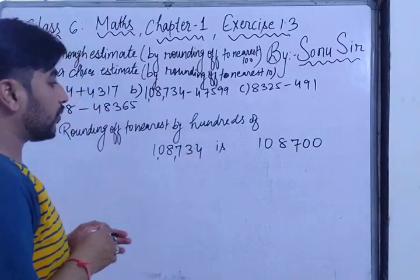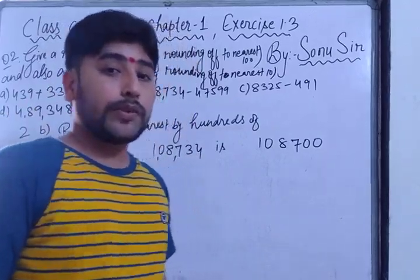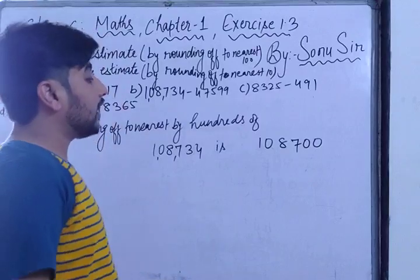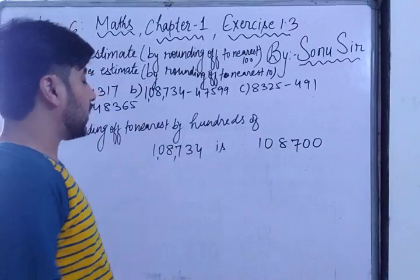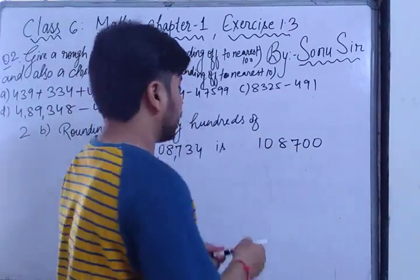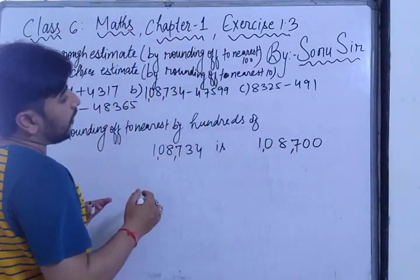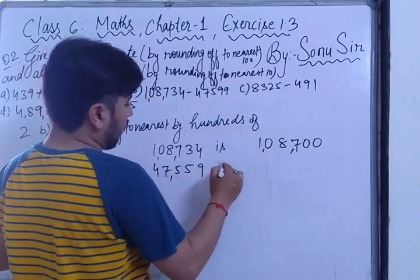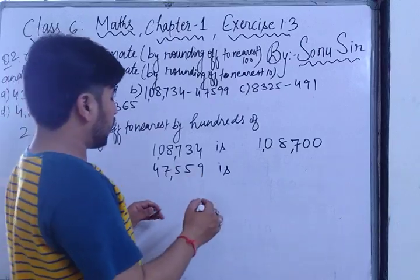If the tens digit were 50 or more, it would round up to 800, but since it is less than 50, it stays at 108700. The second number is 47559 — the tens digit is 5 or greater, so it rounds up to 47600.